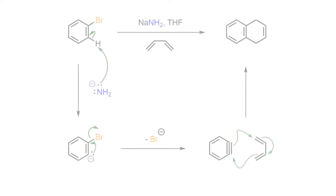If a halobenzene is treated with a very powerful base such as sodium amide, the aryl ring is deprotonated and the leaving group is then lost to generate benzyne. This highly reactive dienophile may then undergo a 4+2 cycloaddition with a diene to produce an annulated six-membered ring via the Diels-Alder cycloaddition.